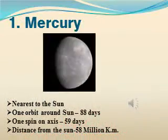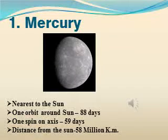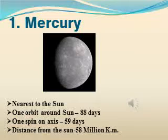Let's discuss all the planets of our Solar System one by one. First is Mercury. It is the nearest planet to the Sun. Its distance from the Sun is 58 million km. One orbit around the Sun takes 88 days — that is its revolution time. One spin on axis takes 59 days — that is its rotation.